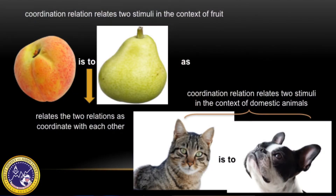So we have discussed how rules are essentially networks of derived stimulus relations used within ACT to understand and treat human psychological suffering. Now let's discuss how the study of derived relations has offered an RFT account of analogical reasoning and metaphor-based ACT methodology. Stewart and Barnes-Holmes 2001 discussed how relating derived relations lies at the root of analogies and metaphors. Let's try this analogy: peach is to pear as cat is to dog, in which one coordination relation is related to another coordination relation. One coordination relation relates two stimuli in the context of fruit and the other relates stimuli in the context of domestic animals. The phrase 'is to' relates two relations as coordinates with each other. The four stimuli do not collapse into a single relational network in which all four elements become equivalent or coordinate, but rather the network consists of two separate relations that are related to each other as relations.